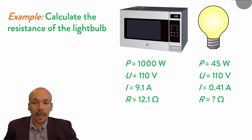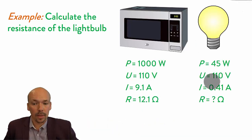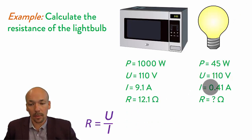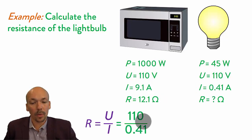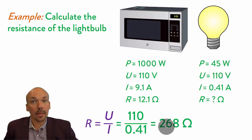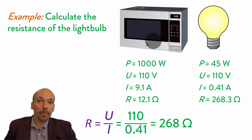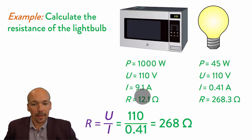Now if we look at the lamp, we can calculate its resistance using the same equation but with different data. Instead of 9.1 ampere, we have 0.41. And you can see that the resistance is a lot higher — the lamp has a resistance of 268.3 ohm, while the microwave has a much lower resistance.